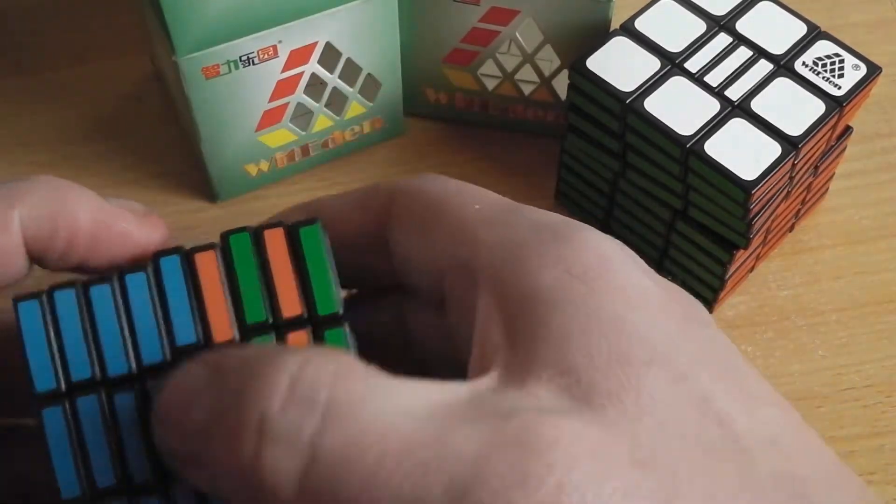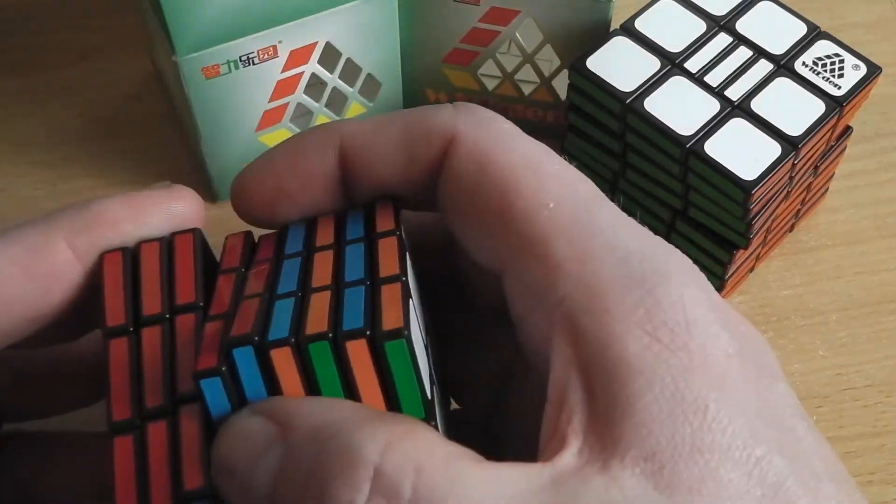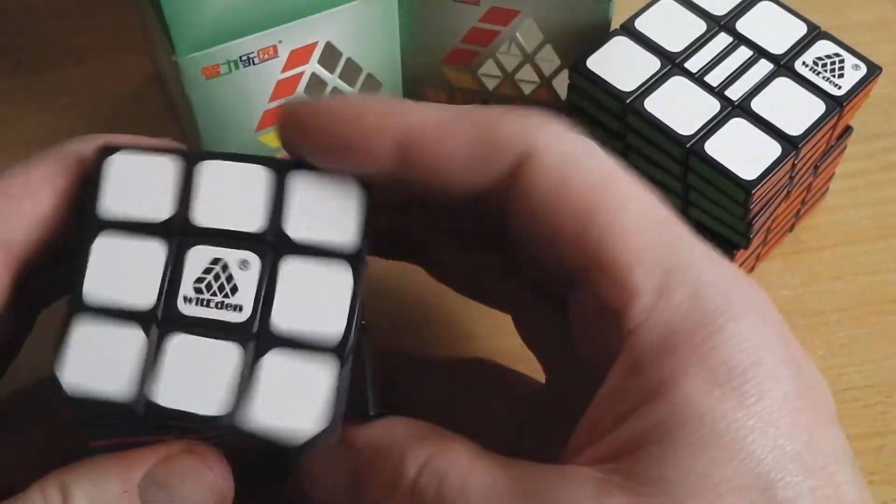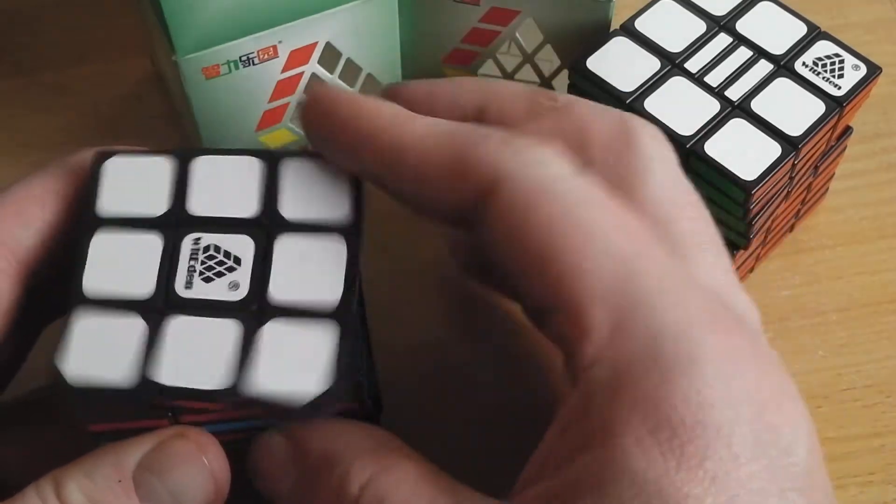All nine layers can be separated from each other and scrambled. Turning quality is really excellent and very easy.